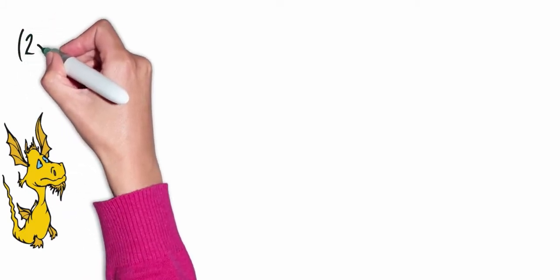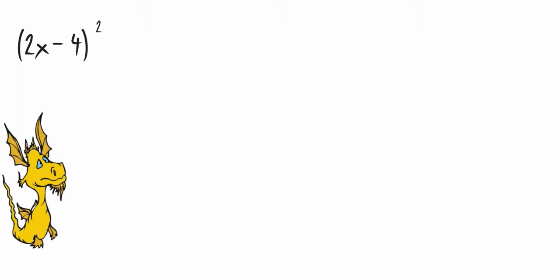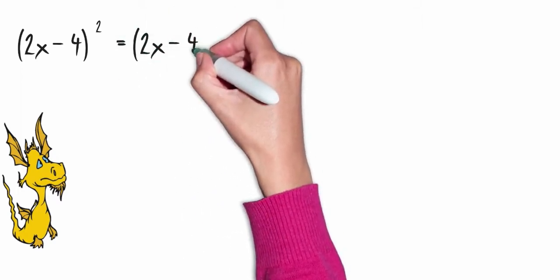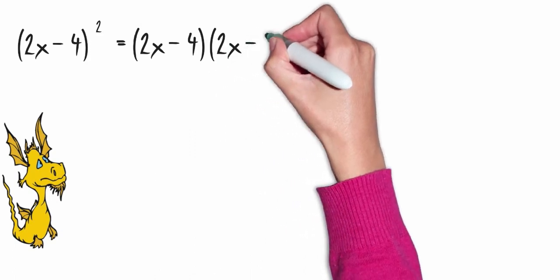I've got 2x minus 4 quantity squared. Again, I want to write out my binomials. So it's 2x minus 4 times 2x minus 4.